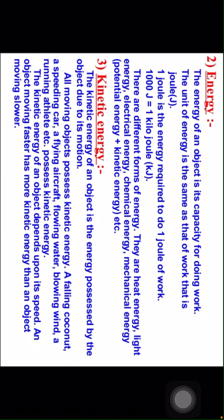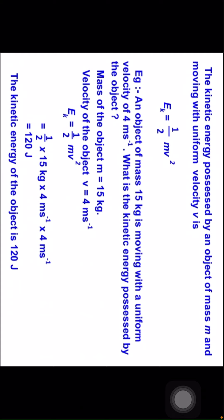What is kinetic energy? The kinetic energy of an object is the energy possessed by the object due to its motion. All moving objects possess kinetic energy. A falling coconut, a speeding car, a flying aircraft, flowing water, blowing wind, running athletes, etc. possess kinetic energy. The kinetic energy of an object depends upon its speed. An object moving faster has more kinetic energy than an object moving slower. The kinetic energy possessed by an object of mass m moving with uniform velocity v is Ek equal to half into mv squared.